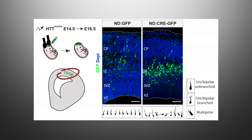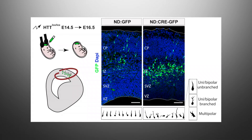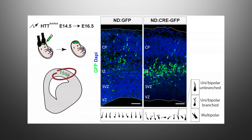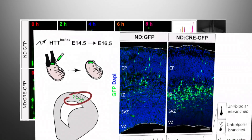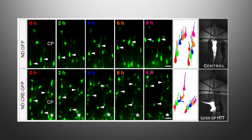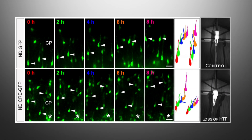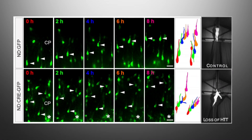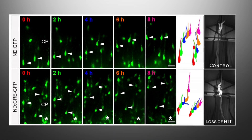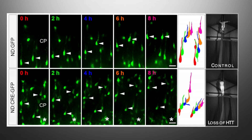In the absence of Huntington, we found fewer cells undergoing the multipolar-to-bipolar transition at E16. Huntington is also important for the maintenance of polarity during migration, and in the absence of Huntington, this mechanism is impaired.